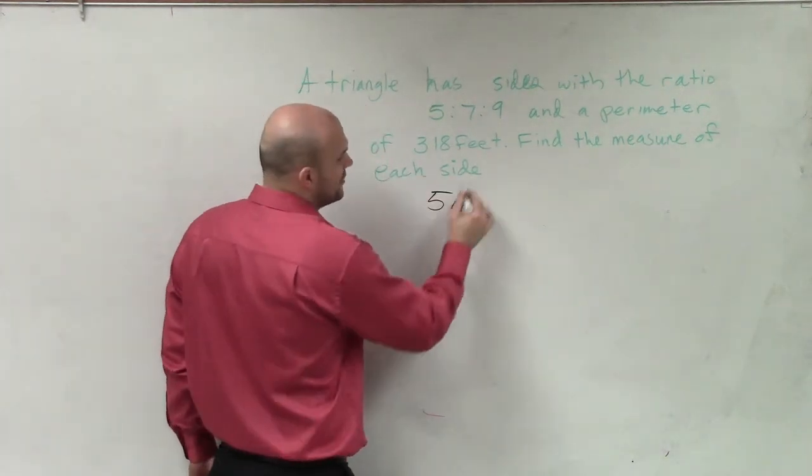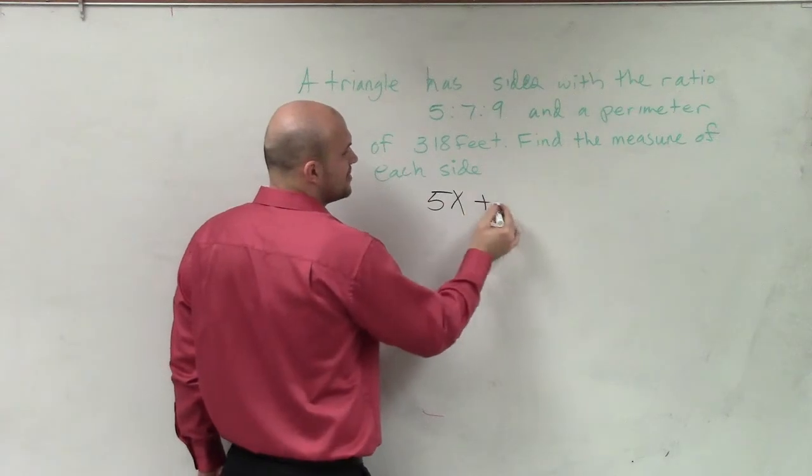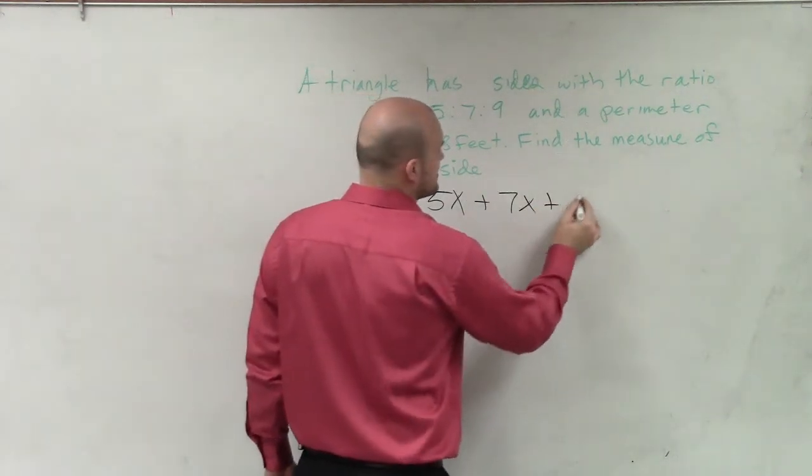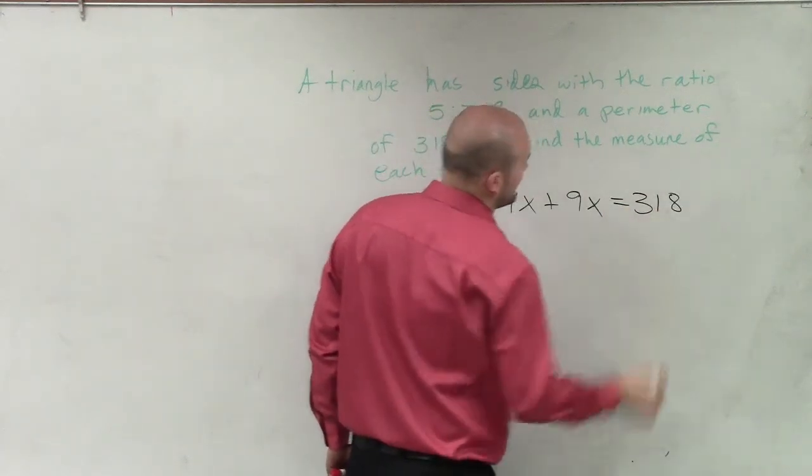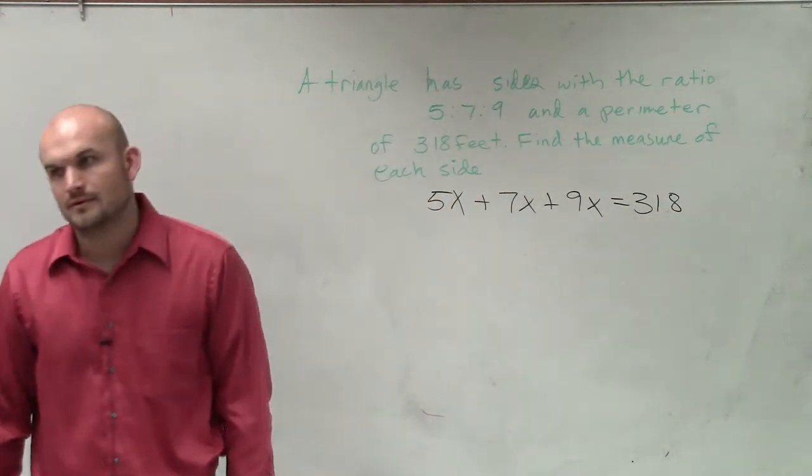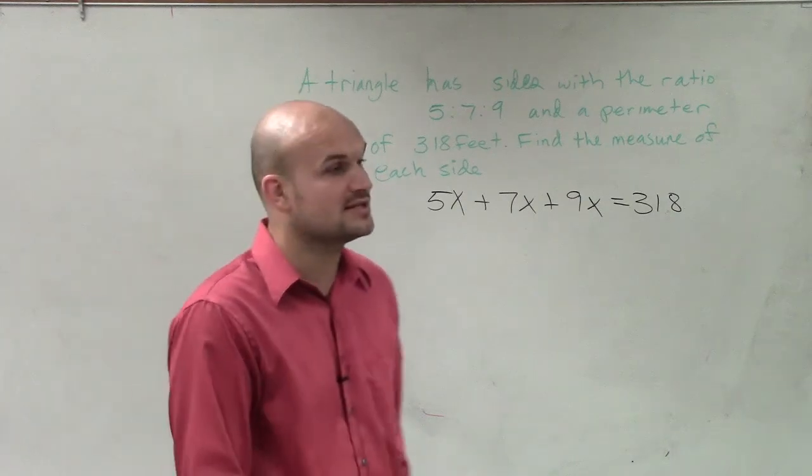So I know that 5 times a number, well, if we don't have a number, let's call that x. 5 times a number plus 7 times a number plus 9 times that same number equals 318.